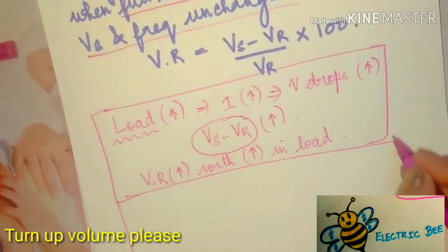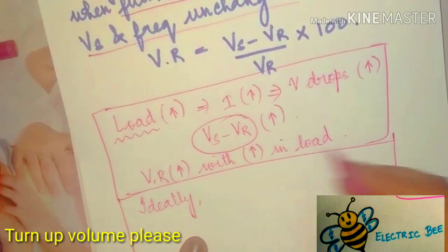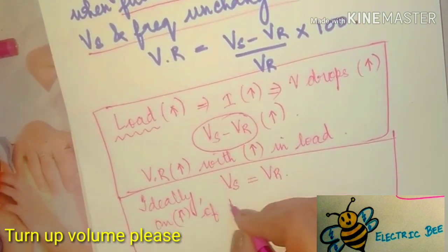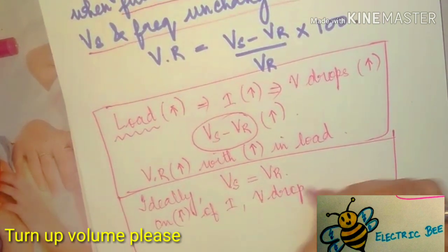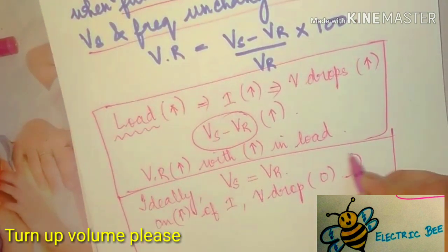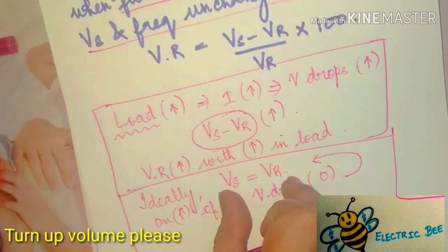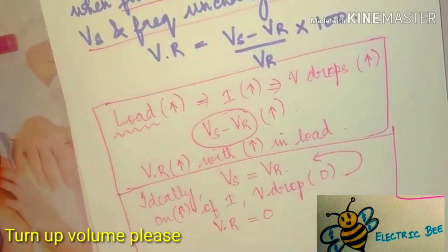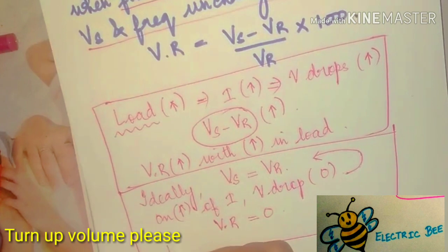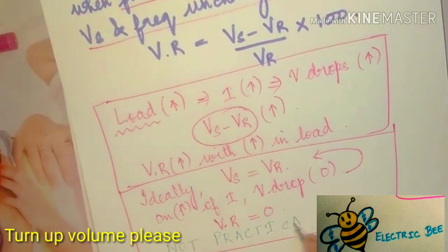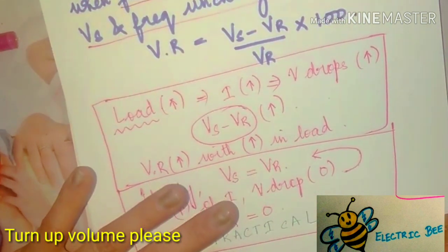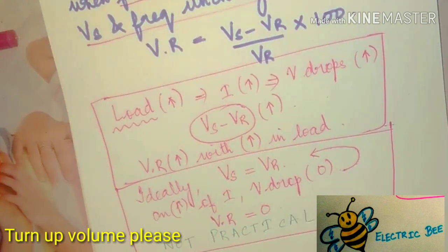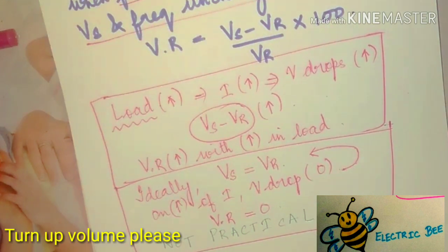Ideally, the voltage at the sending end should equal the voltage at the receiving end, and voltage drops should remain zero even with increasing current. If VS = VR, then VS − VS = 0, so ideally voltage regulation equals zero. However, this is not practical because voltage drops always exist and increase with load.